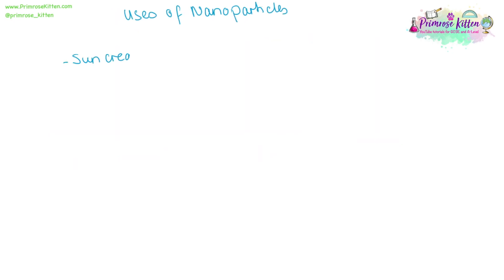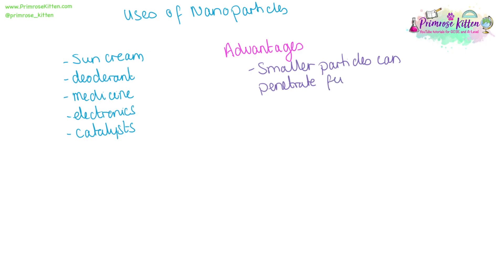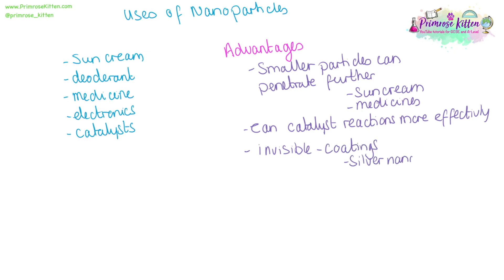Nanoparticles have a wide range of uses. They can be used in sun creams or deodorants, medicines, electronics and even catalysts. Some of the advantages are that the small particles can be absorbed better. This is relevant for things like sun cream, deodorants, potentially medicines. An advantage for catalysts is they can catalyse the reactions more efficiently. Because they are so small and they sink in, they can be invisible. You can have a film over something, for example, silver nanoparticles can be used as an antibacterial film on kitchen surfaces. Whereas it wouldn't be realistic to coat kitchen surfaces with a layer of non-nano silver, because that would be very expensive and would look slightly strange.